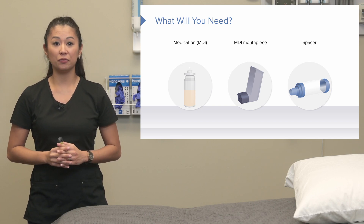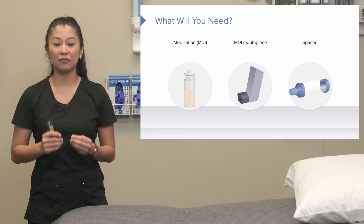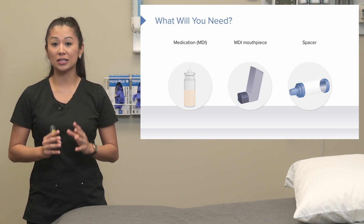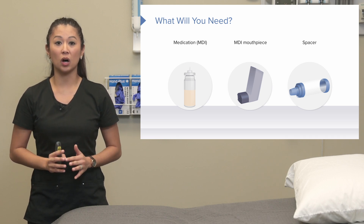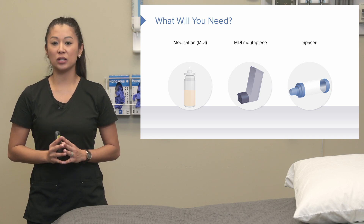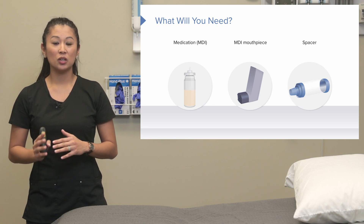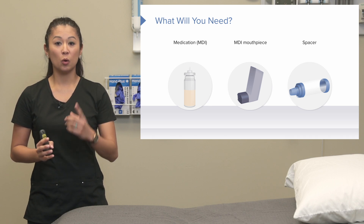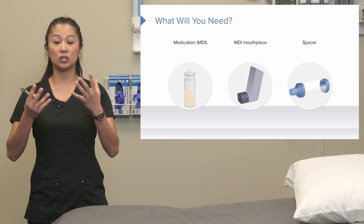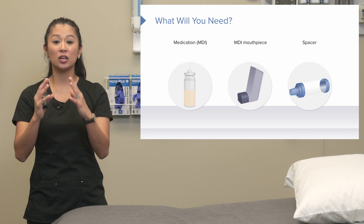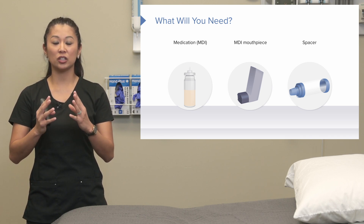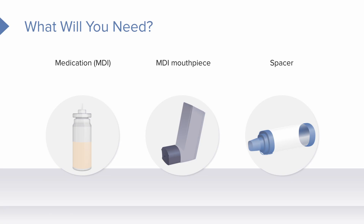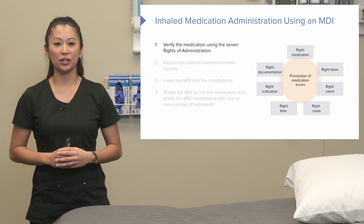Let's look at the equipment. First, you need the medication itself, which usually slides into a specific mouthpiece. Some inhalers — not all — have something called a spacer. A spacer is an extra piece of equipment that attaches to the mouthpiece. When the medication squirts into the spacer, it aerosolizes and gets trapped in the clear portion so it doesn't escape into the air. This gives the patient a little more time to breathe the medication into their lungs for maximum effect.